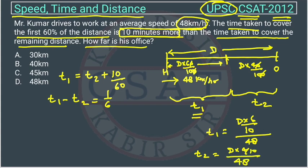We can put this value here. This will become D into 6 by 10 by 48 minus D into 4 by 10 by 48 equal to 1 upon 6.